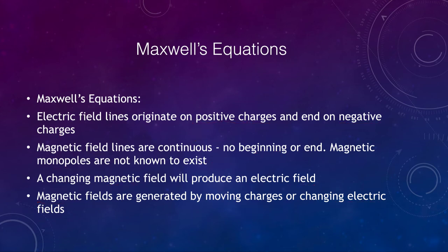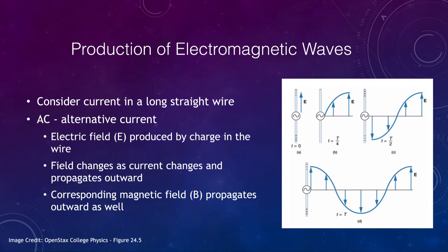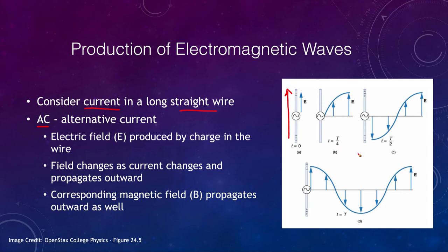Let's look in more depth at how we produce electromagnetic waves. Let's start by thinking about a current traveling in a long straight wire. The wire carries an AC, or alternating current, meaning it constantly alternates in direction. An electric field is produced by the charges in the wire as they move through it. As we move outward from the wire, we get variations that rise and then fall — over time we get a sinusoidal wave that drops down, reaches a minimum, then goes back up. So we are generating an electric field because of the moving charges.